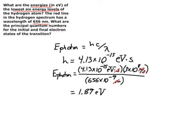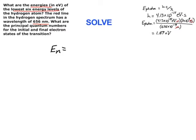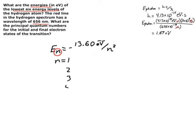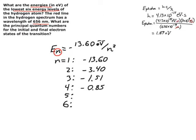Now we go back to the first part of the problem: calculating the energies of the first six energy levels of the hydrogen atom. The energy for the nth level is E_n = −13.6 eV / n², where n is the principal quantum number. Calculating for n = 1 through 6: n=1 gives −13.6 eV; n=2 gives −3.4 eV; n=3 gives −1.51 eV; n=4 gives −0.85 eV; n=5 gives −0.54 eV; n=6 gives −0.38 eV. All values are negative because they are all below zero energy.